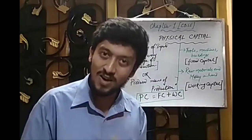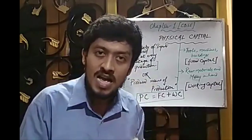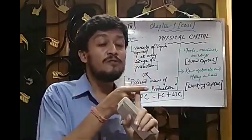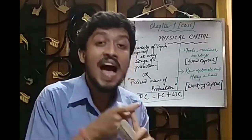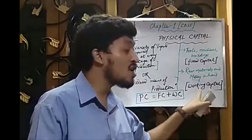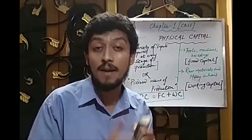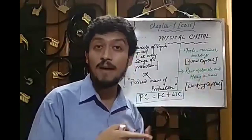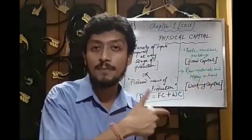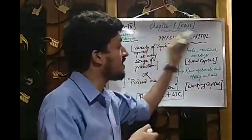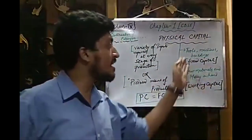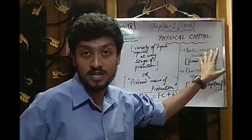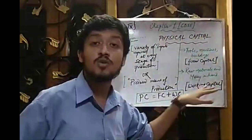This particular physical capital is basically divided into two broad categories. The first category is known as fixed capital and the second one is known as working capital. We will begin with the first topic of discussion, fixed capital, and then we will move on to working capital.